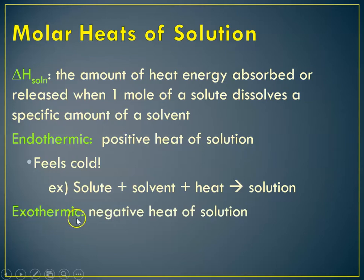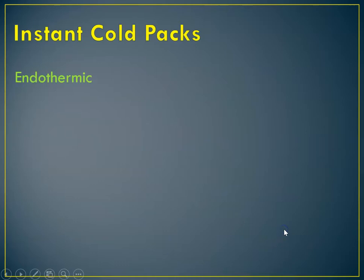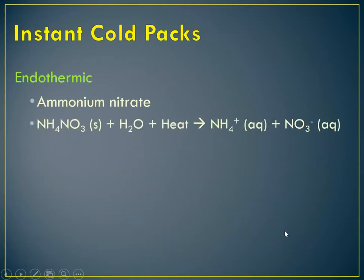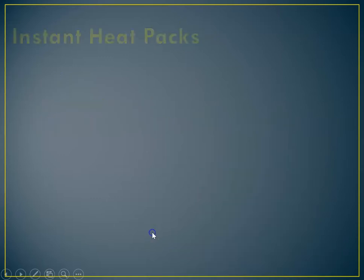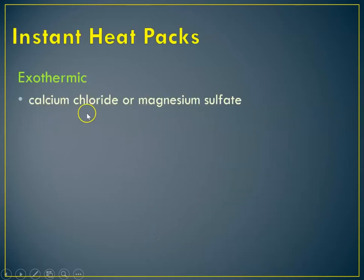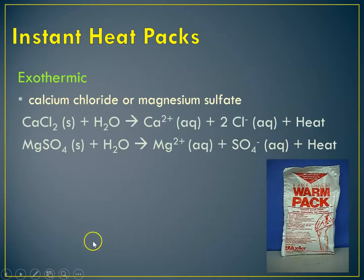If you had an exothermic reaction — a negative heat of solution — it feels hot to the touch because heat is released. If heat is flowing into the system, it's endothermic; if it's being released, it's exothermic. Instant cold packs are endothermic — ammonium nitrate is one example. Instant heat packs are exothermic — calcium chloride and magnesium sulfate are sometimes used, and heat is released. I have a little simulation that will show you how that works.